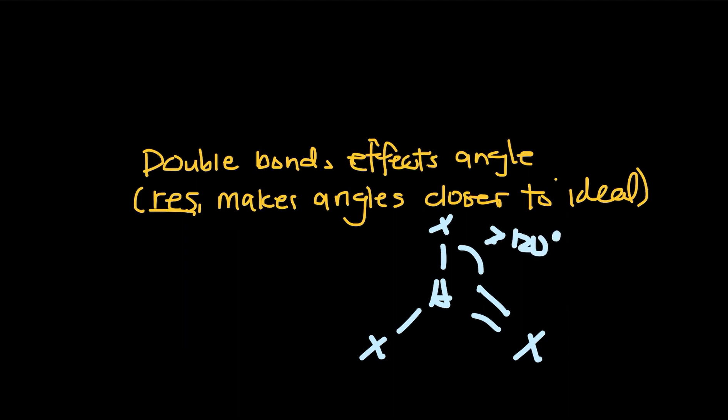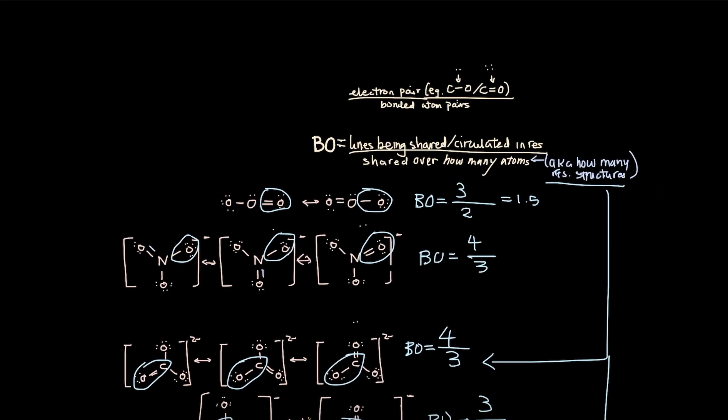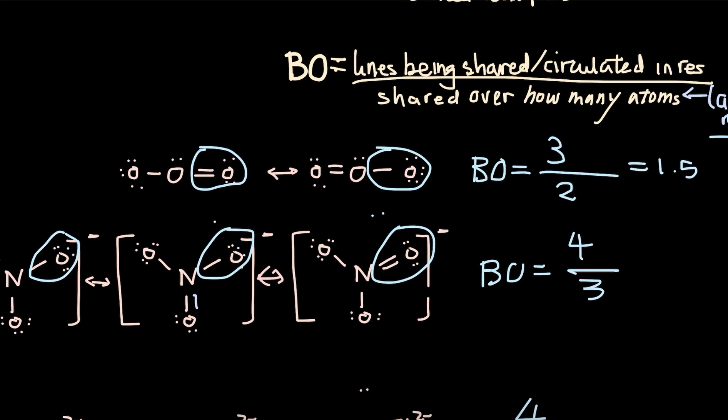But now, what about resonance structures? So say the resonance is distributed across all of these three. Is there still an effect of double bonds? So for example, you see in our nitrate example here. In just one diagram, it looks like there's only one double bond.